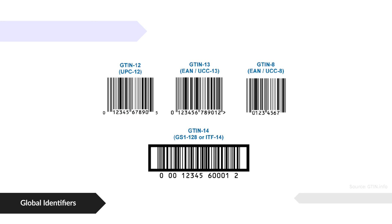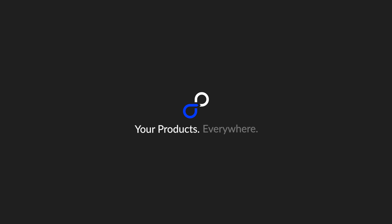When you get to the marketplaces, there are additional requirements and each product needs to have a UPC, etc. But marketplaces themselves will also have their own identifiers — Amazon has their own ASINs, Amazon Standardized Identification Numbers, and Walmart has their own WPID. Marketplaces are giving unique identifiers to items in their catalog, whether it's third-party sellers or their own items.